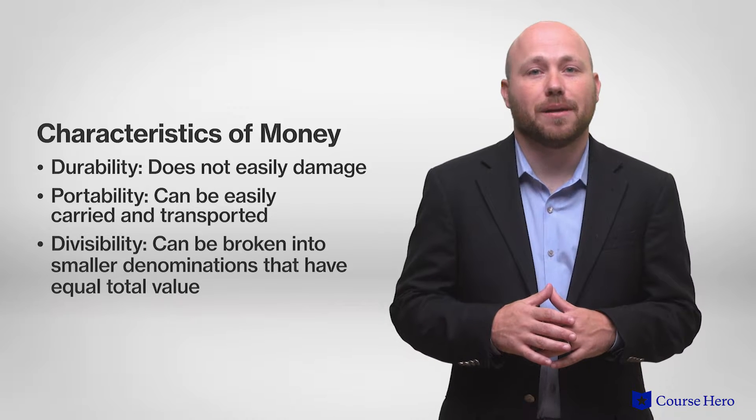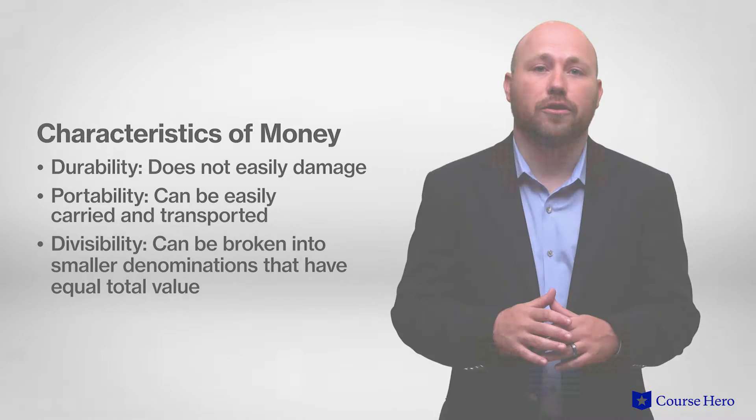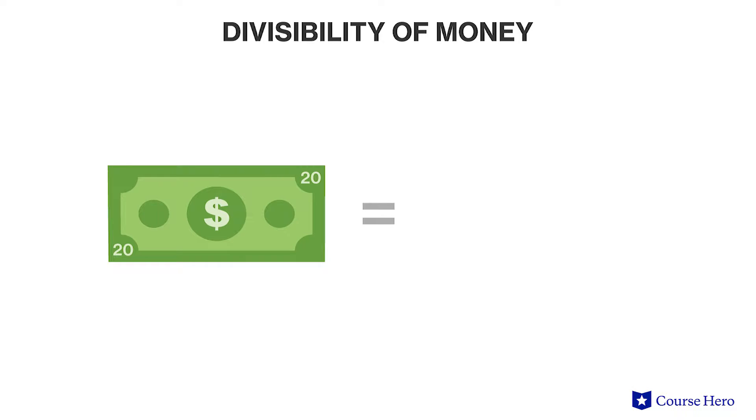Divisibility. Cash of large denominations can be broken into smaller denominations that have equal total value. For example, a $20 bill can be exchanged for two $10 bills.